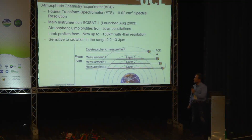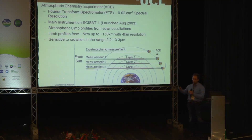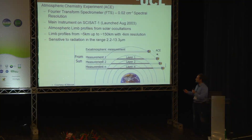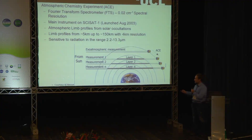The first instrument we're using is the ACE satellite with its key instrument, the Fourier Transform Spectrometer. ACE is interesting because instead of looking down at the earth it takes limb profiles — slices of the atmosphere — giving a very nice vertical profile down to about five kilometers. One of the more important aspects of ACE is its spectral resolution of about 0.02 wavenumbers. This becomes key for finding carbon-13, as its spectral lines are very close to carbon-12 and we need that resolution to pick them out. The infrared radiation range is sensitive from about 2.2 to 13.3 micrometers, covering most of the main methane absorption windows.